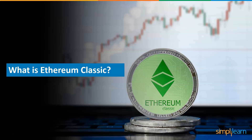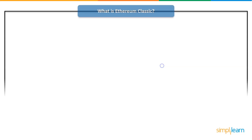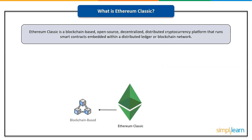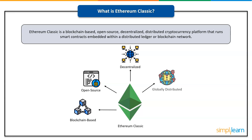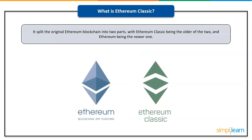Ethereum Classic is a blockchain-based, open source, decentralized, distributed cryptocurrency platform that runs smart contracts. It is a decentralized governance platform that leverages smart contracts embedded within a distributed ledger or blockchain network. It splits the original Ethereum blockchain into two parts, with Ethereum Classic being the older of the two and Ethereum being the newer one.